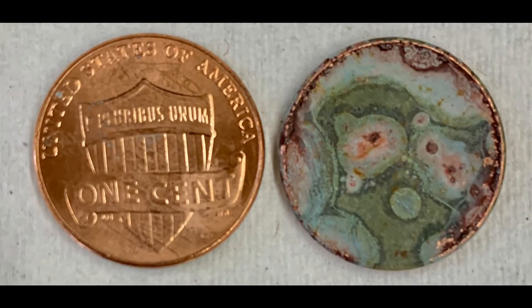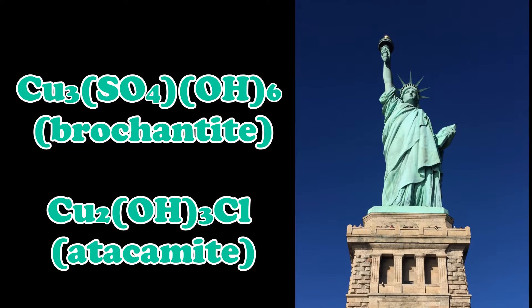It is a copper patina that is responsible for the green color of the Statue of Liberty. A wide variety of compounds have been identified in copper patinas, and the formulas for a few of these compounds are displayed here.